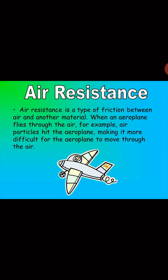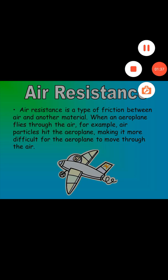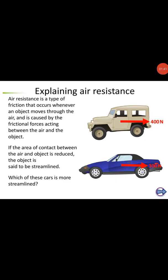In this image there are two types of four-wheelers. The upper one has a broader front — the front part of the vehicle is broad, so the area of contact is more. If the area of contact is more, the air resistance will be more. The air resistance on the first vehicle, shown with the red arrow, is 400 Newtons. Now if you see the car — the blue one shown below — the front part is streamlined.